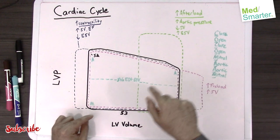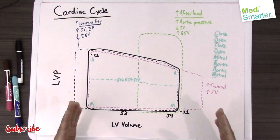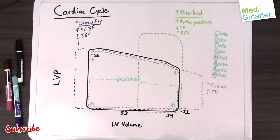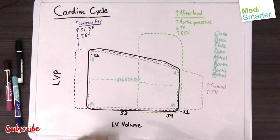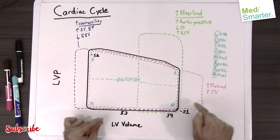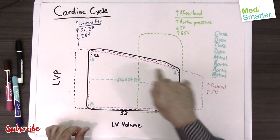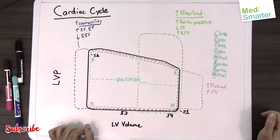You can see that demonstrated here in the graph via the pink lines. The pink lines are showing you if you had a lot of fluid overload, then this is basically what would happen to the graph. You would have more diastolic filling and that would correspond to the high preload.